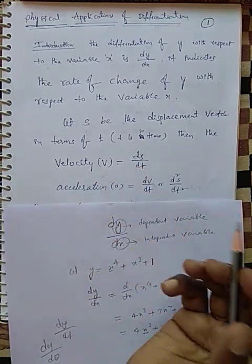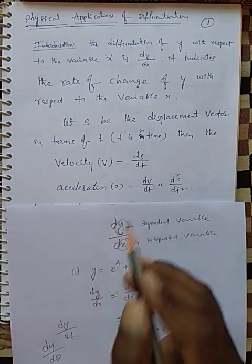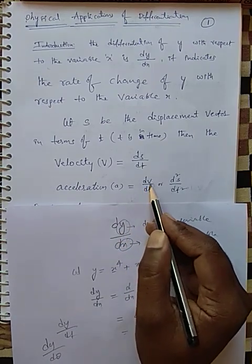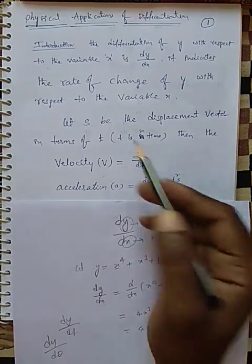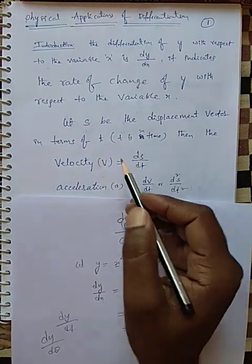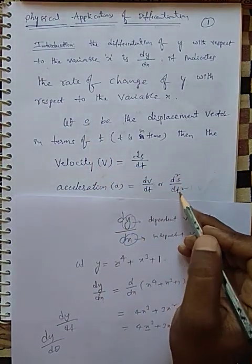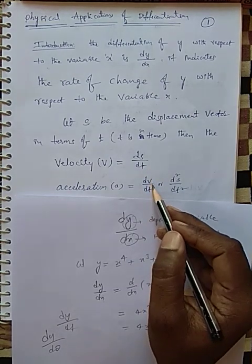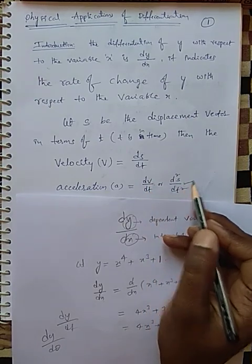What is the definition of acceleration? We denote acceleration with small a. Rate of change in velocity is acceleration, that is dv by dt. Or we can differentiate the displacement vector twice with respect to t to get acceleration: d²s/dt². That is, substituting V = ds/dt, we get d/dt of ds/dt, which is d²s/dt².